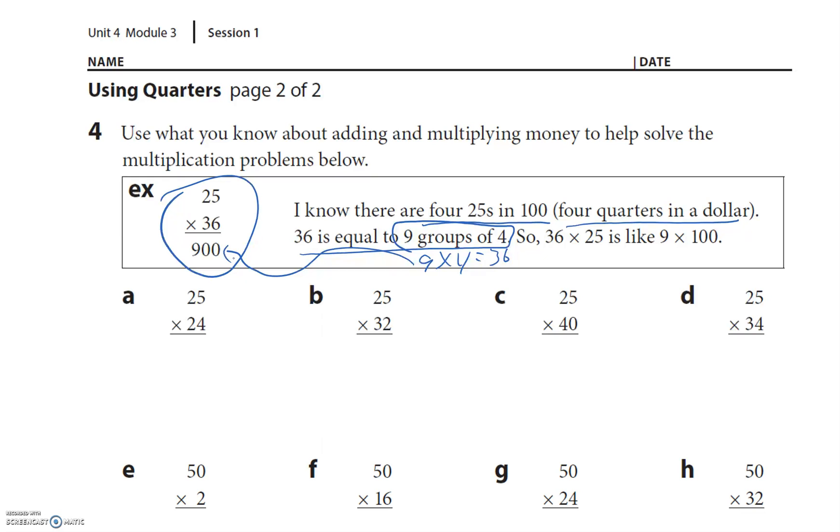We just did 25 times 24. So 24 is how many groups of four? Six groups of four. Every group of four is 100, so that's 600. Next one: how many groups of four in there? Well, it's eight times four, so I believe that's 800. 25 times 40: ten groups of four, so ten times 100 is 1000. Thirty-four groups? Well, we already knew that 32 groups was 800, so 34 is 50 more, so I'm gonna say 850.